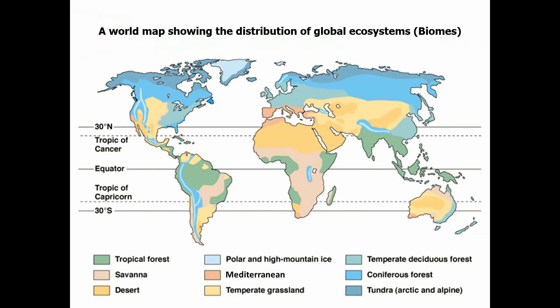Starting closest to the equator, we can see tropical forests in those locations — places like South America, in countries like Brazil, throughout Central Africa in countries like the Democratic Republic of the Congo or Nigeria, and down into Southeast Asia in countries like Malaysia and Indonesia, where we have tropical rainforests.